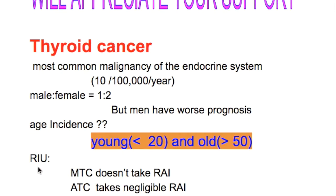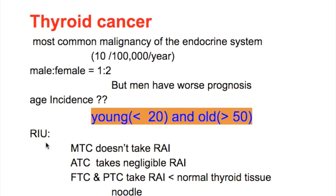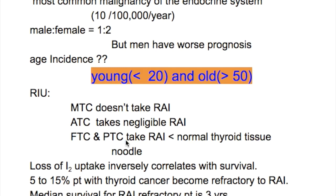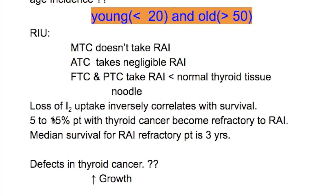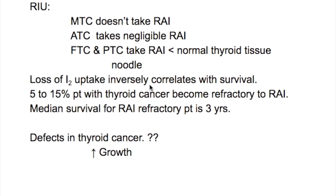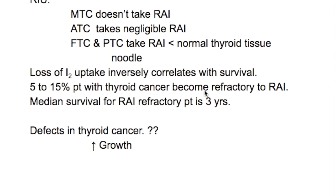Regarding radioactive iodine uptake: medullary thyroid carcinoma does not take radioactive iodine. Anaplastic thyroid carcinoma takes negligible radioactive iodine. Follicular and papillary thyroid carcinoma take radioactive iodine, but less than normal thyroid tissue. Loss of iodine uptake inversely correlates with survival. 5 to 15% of patients become refractory to radioactive iodine, and median survival for refractory patients is 3 years.